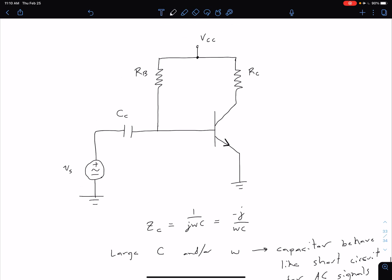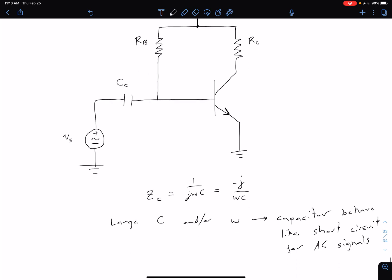But of course, any DC signal, any DC component of our current in our base for instance, is going to be blocked by this capacitor because for our base current we have zero frequency if it's DC. A zero there would be an infinite impedance, so it's allowing our AC signal to flow freely through that capacitor but blocking any DC signal.